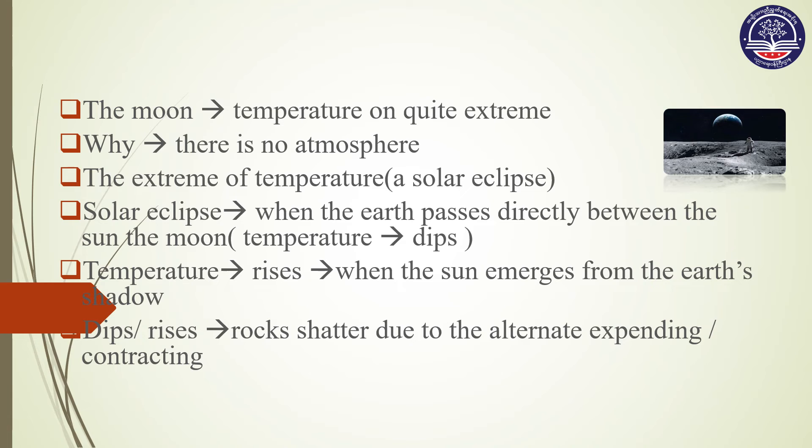A solar eclipse is when the Earth passes directly between the sun and the moon, temporarily blocking out the sun's light. At that time, the temperature on the moon drops very rapidly, and then does not rise immediately when the sun emerges from the Earth's shadow. The change in temperature may be as much as 200 degrees in just one hour. This causes rocks to shatter due to the alternate expanding and contracting.